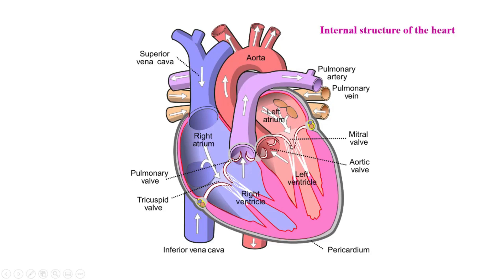The left atrium opens into the left ventricle. Here is the opening. This opening is guarded by a valve — the mitral valve, also called the bicuspid valve.